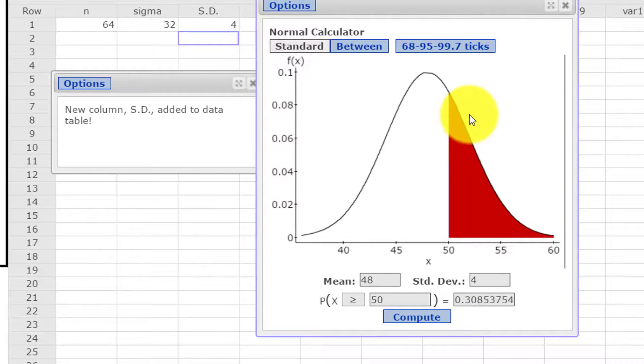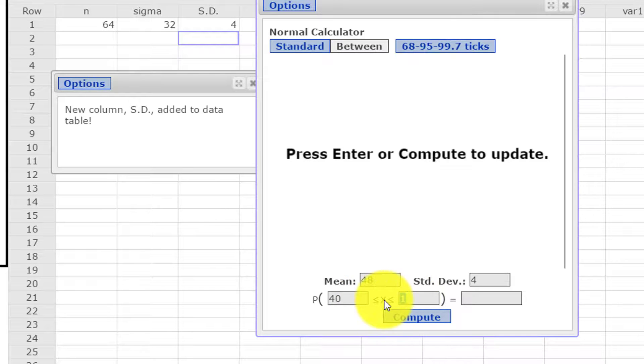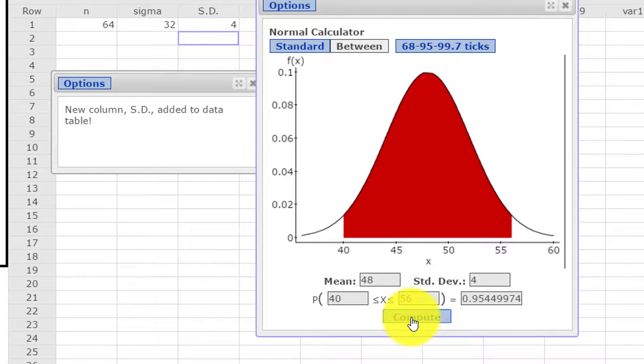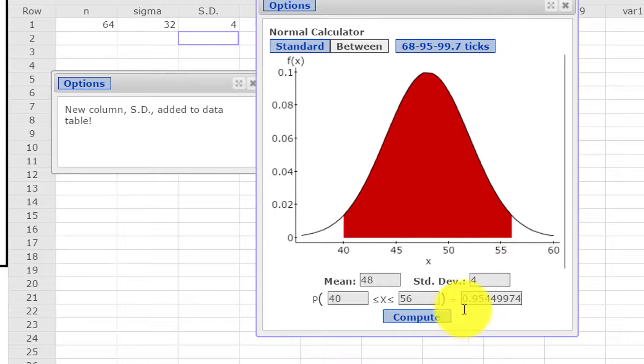So the easy way to do that with the calculator is click on the little tab there, between. We still have our mean and standard deviation. That did not change, but we want to know between 40 on the low side and 56 on the high side. And we click compute and it draws our neat sketch again there.